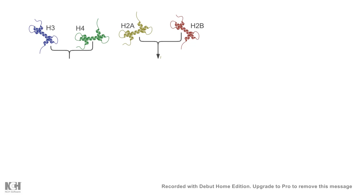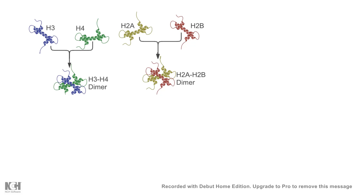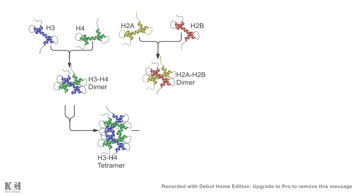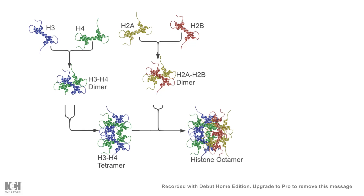H3 and H4 histones form a pair with each other to form an H3-H4 dimer, and H2A and H2B form an H2A-H2B dimer. H3-H4 then forms a tetramer, on top of which the H2A-H2B dimer sits, and thus they form a core histone octamer. DNA is negatively charged due to the phosphate backbone, and this negatively charged DNA wraps around the core histone octamer.